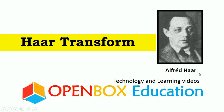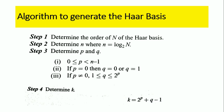Here is the algorithm to generate the Haar basis. Step one is to determine the order N of the Haar basis. Step two is to determine n, where n is nothing but log N base 2. Step three is to determine the p and q values. The p value is in the range zero less than or equal to p less than or equal to n minus one.